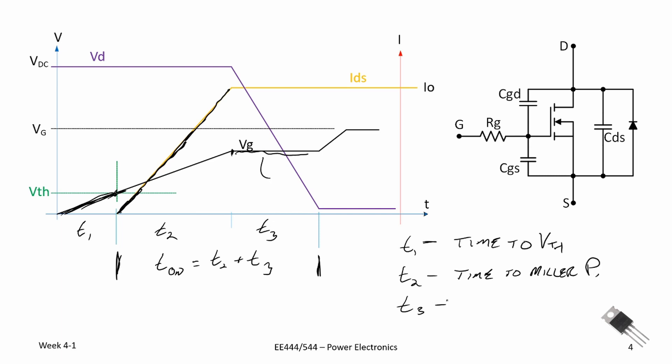Finally, once we've reached the Miller plateau, the drain-to-source voltage will start to drop or fall until it reaches a final value here and we are in conduction. This voltage, this small voltage V, is equal to the drain-to-source current times the drain-to-source resistance. And then we're in conduction. The total time for turn-on is T2 plus T3.